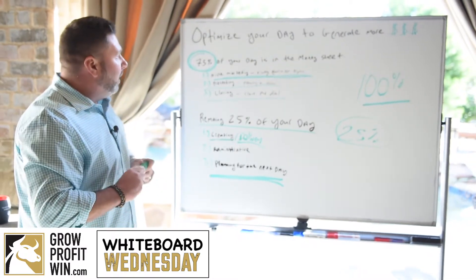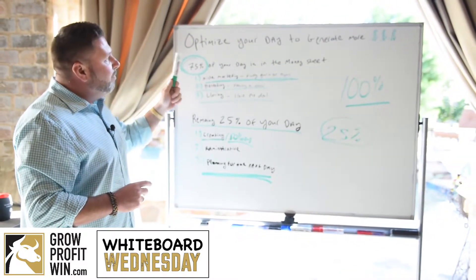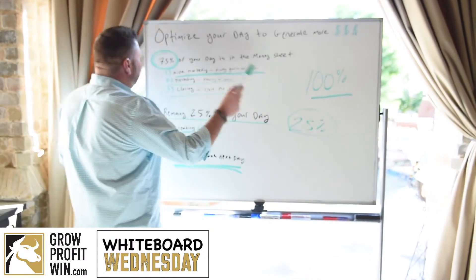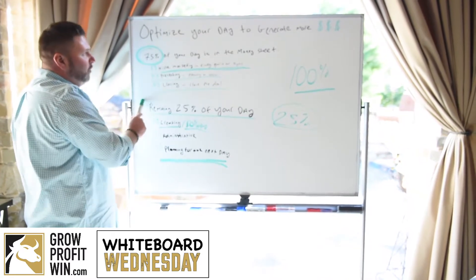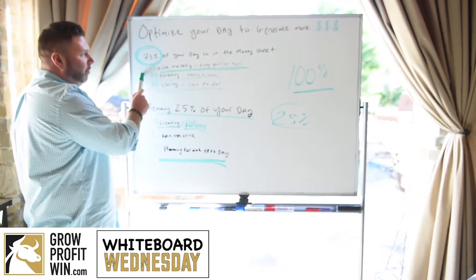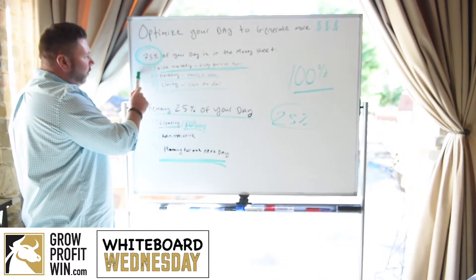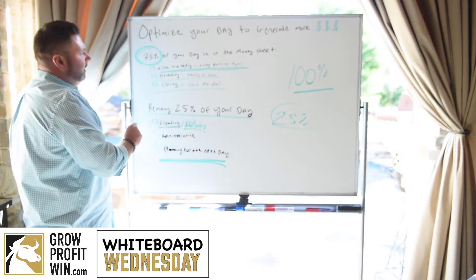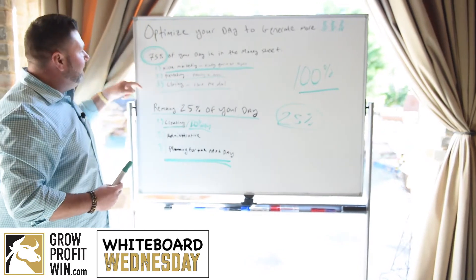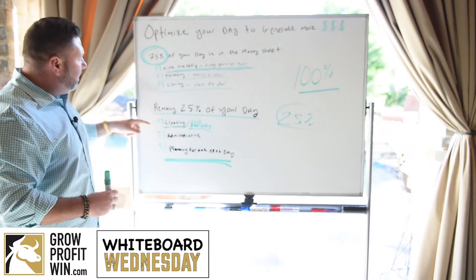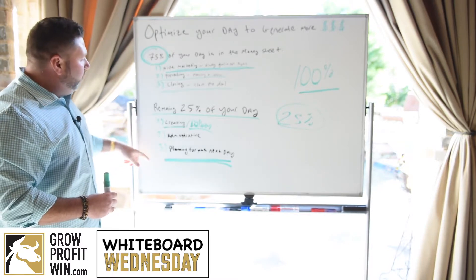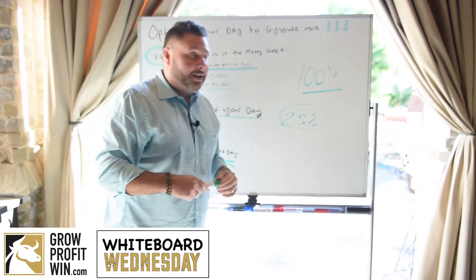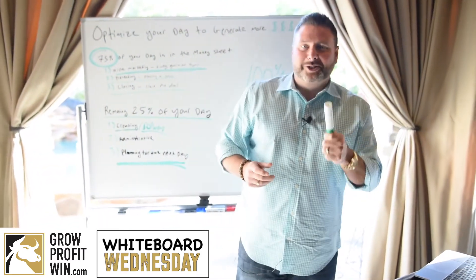To recap: optimize your day to generate more revenue. 100 percent of your day breaks into 75 percent revenue-generating activities — niche marketing, presenting, and closing — and 25 percent where you create content and assets, handle administrative tasks, and plan for the next day. I hope you enjoyed this Whiteboard Wednesday and we'll see you next time.